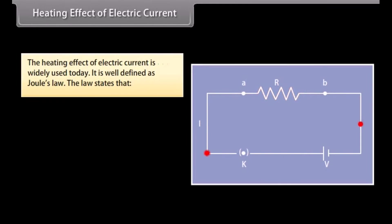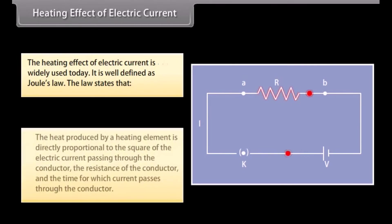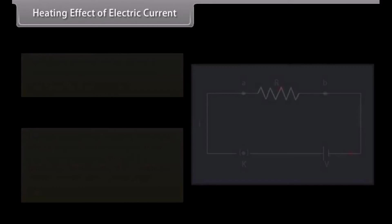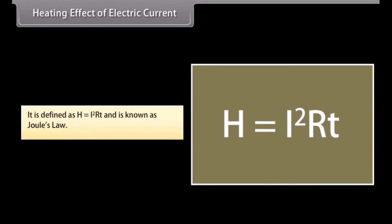The heating effect of electric current is widely used today. This effect is caused when electric current is passed through a conductor, generating heat due to the resistance it offers to the current flow. The work done in overcoming this resistance produces heat. The heat produced is directly proportional to the square of the electric current, the resistance of the conductor, and the time for which current passes. It is defined as H = I²RT, and is known as Joule's Law.